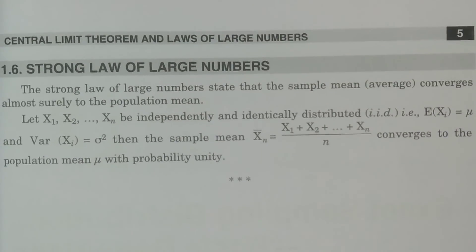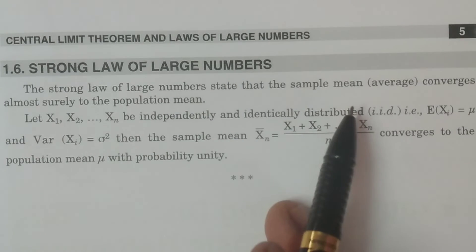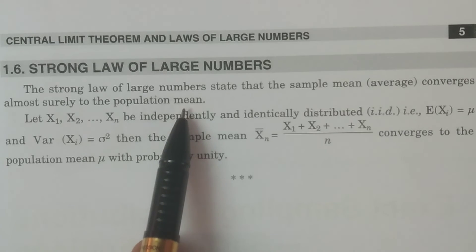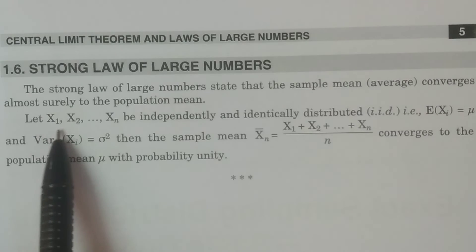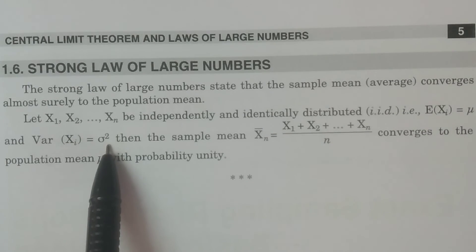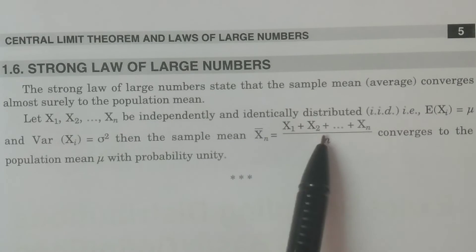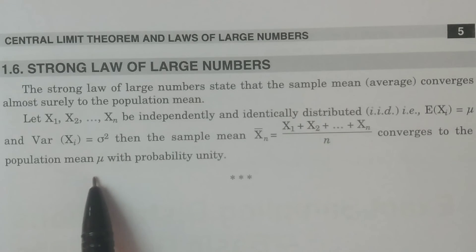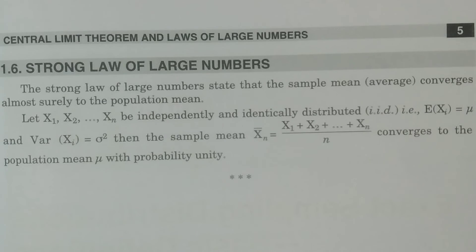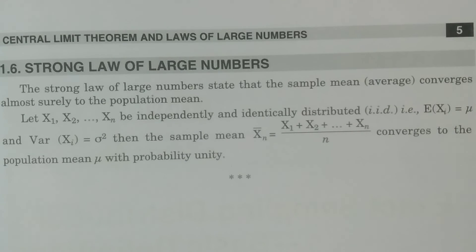Now I explain the strong law of large numbers. The strong law of large numbers states that the sample mean — the average — converges almost surely to the population mean μ. Considering x1, x2, ..., xn as independently and identically distributed (IID) random variables with expectation of xi equal to μ and variance of xi equal to σ², then the sample mean x̄n equals (x1 plus x2 plus ... plus xn) divided by n, and x̄n converges to the population mean μ with probability 1. Both the weak law and strong law indicate the distribution of x̄n in comparison to the population mean μ.